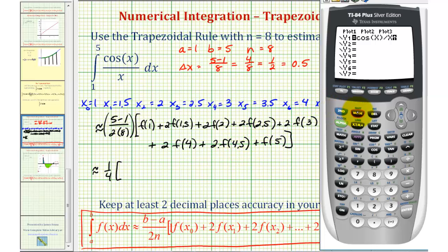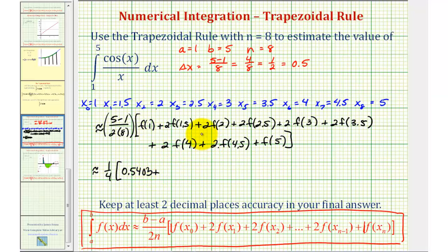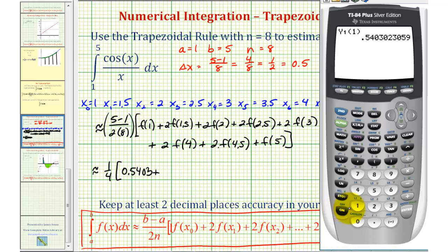So I'm going to press second mode to go to the home screen, and then to find f of 1, which would be cosine 1 divided by 1, I can simply press vars, right arrow, enter, enter, and then in parentheses, 1. So the first function value is approximately 0.5403 to four decimal places. Next we have 2 times f of 1.5. So I'll press 2, again vars, right arrow, enter, enter, and in parentheses 1.5. This is a nice way to avoid having to evaluate this using cosine x divided by x each time. So if we press enter, 2 times f of 1.5 is approximately 0.0943.